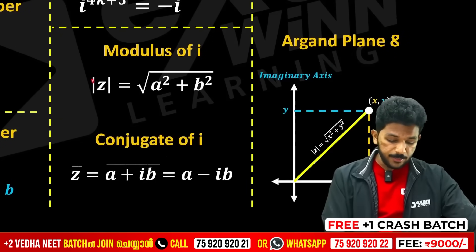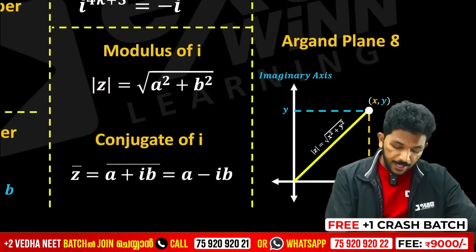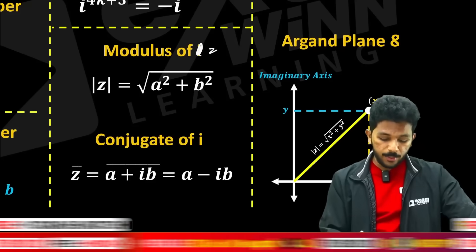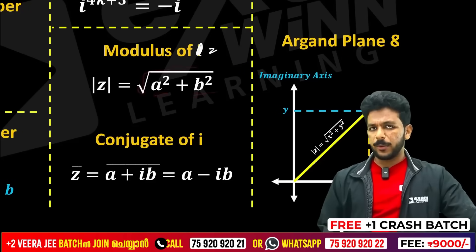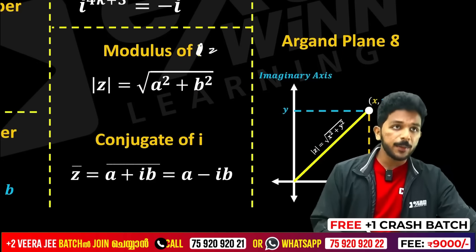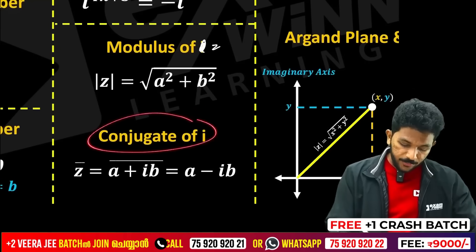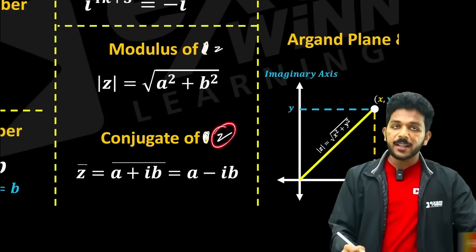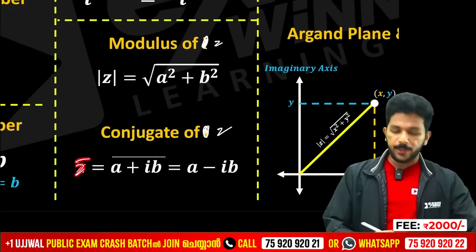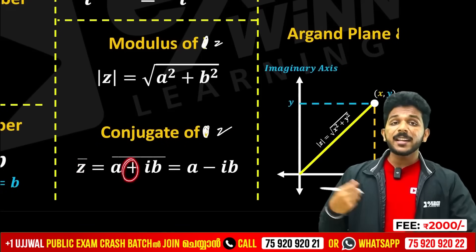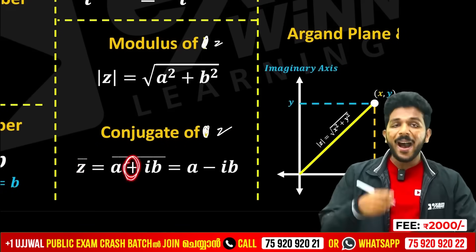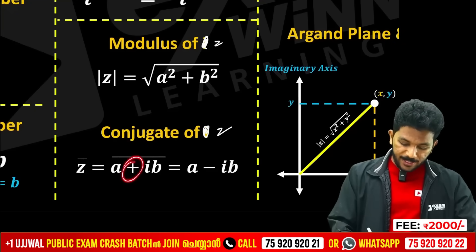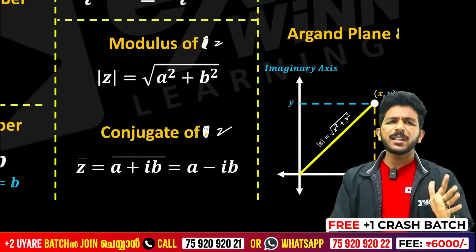Modulus of z — mod z — is the modulus of a complex number, equal to root of a squared plus b squared. The conjugate of z, written as z-bar — if z equals a plus ib, then z-bar equals a minus ib. So conjugate changes the sign of the imaginary part: a plus ib becomes a minus ib.